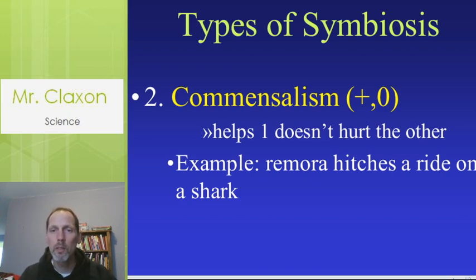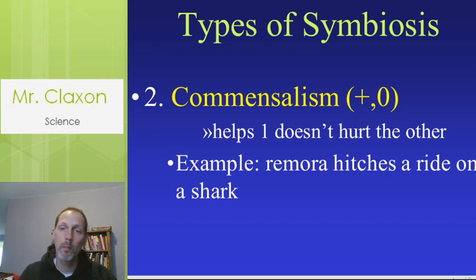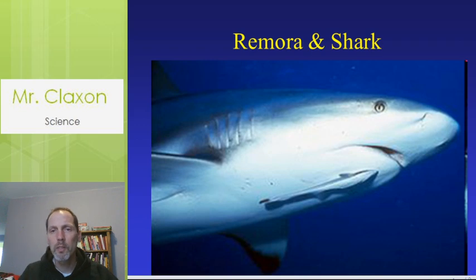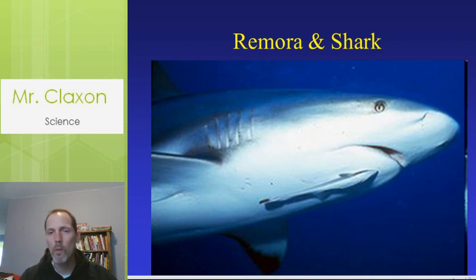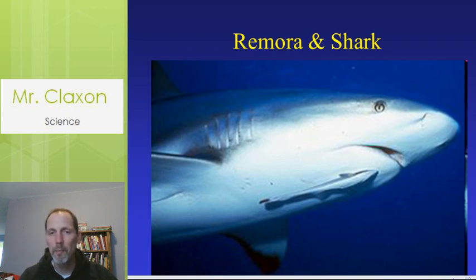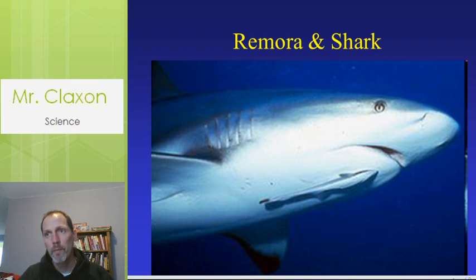The second type, commensalism, is where it doesn't hurt one but helps the other. A good example is the shark and the remora fish that attaches to it. It's not a parasite — it doesn't hurt the shark. The remora rides to different locations and benefits by moving around, maybe picking up scraps left over by the shark. That benefits one but doesn't hurt the shark at all.